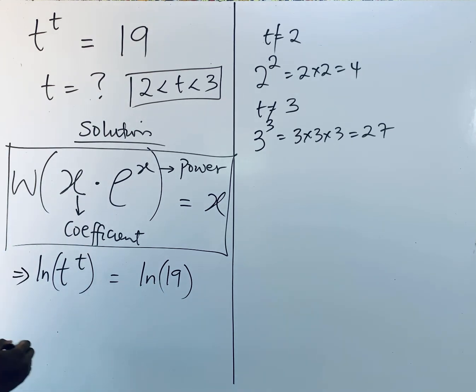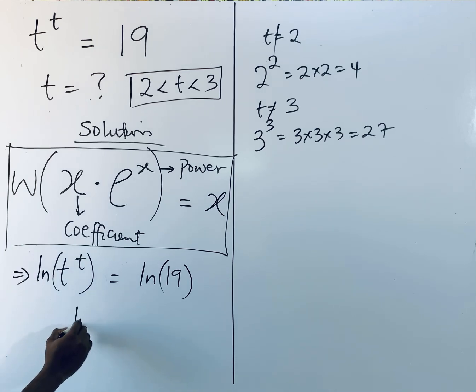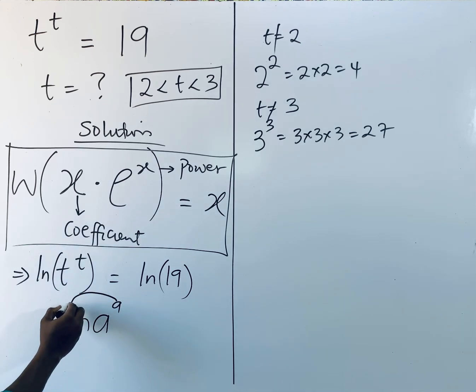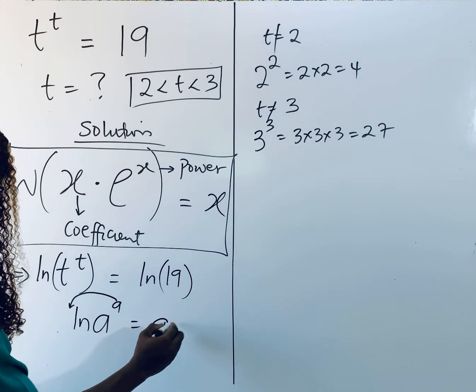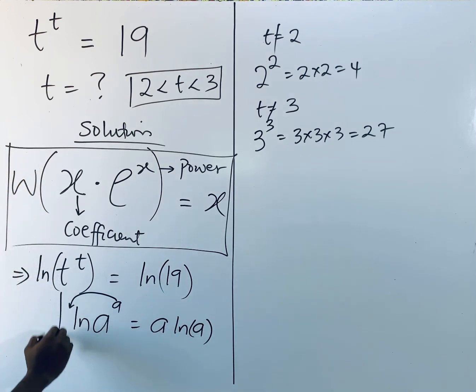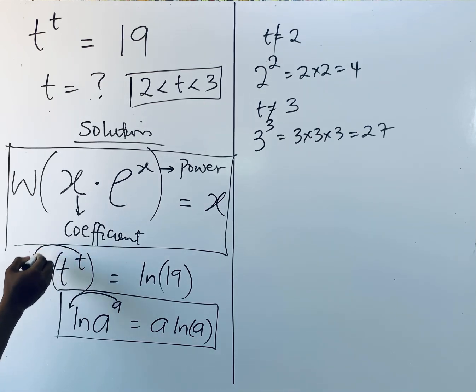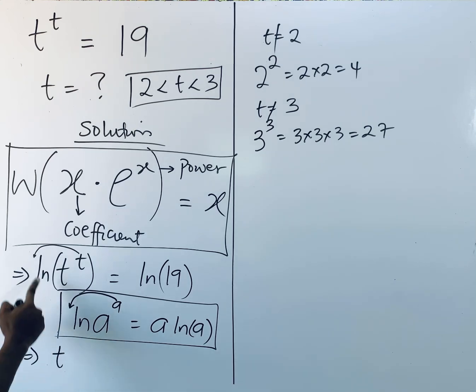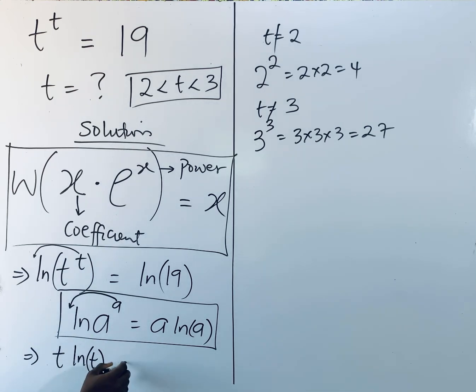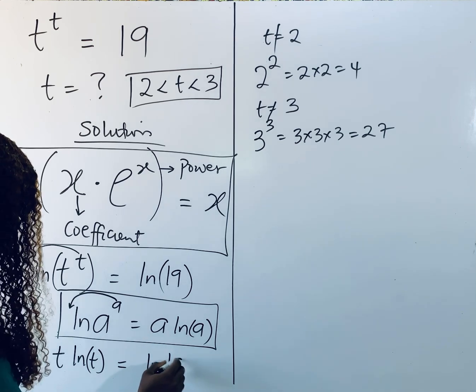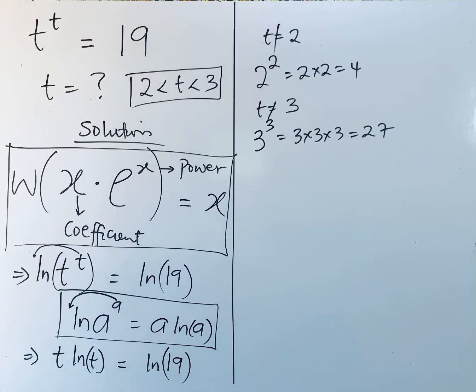But you have to recall that each time you have ln of a to the power of a, remember your rule of logarithms: this power of a multiplies the log and gives you a ln of a. So this is also another guide. Now applying it here, this power is going to multiply. So we're going to have t multiplying ln of t, and that equals ln of 19.